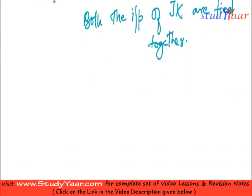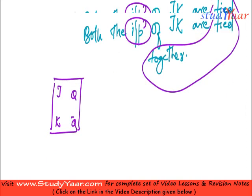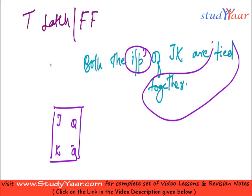So how does your T-latch look like? For that we would have to first draw a JK latch or JK flip-flop. I have a J, I have a K, I have Q and I have Q-bar. Inputs are tied together which means this is my T and the same value is given to J and same value is given to K. This is your T-latch or T-flip-flop.